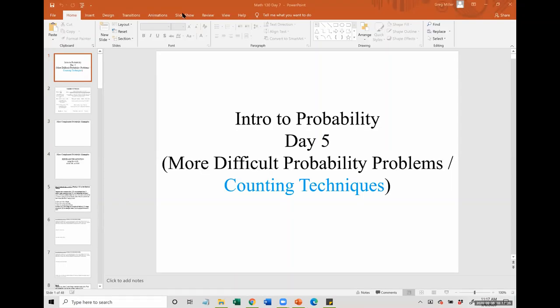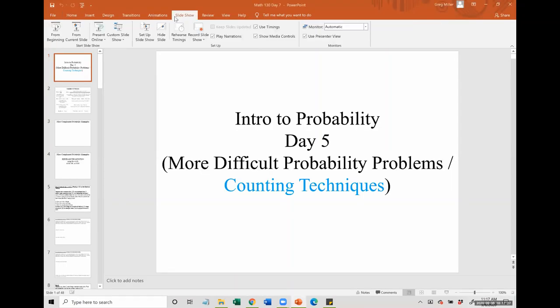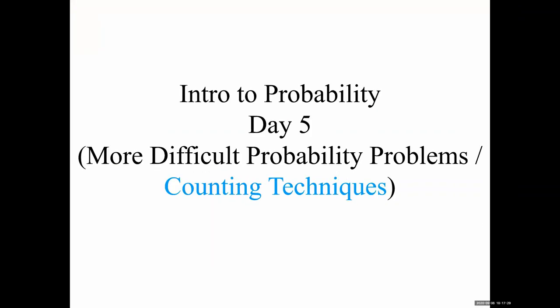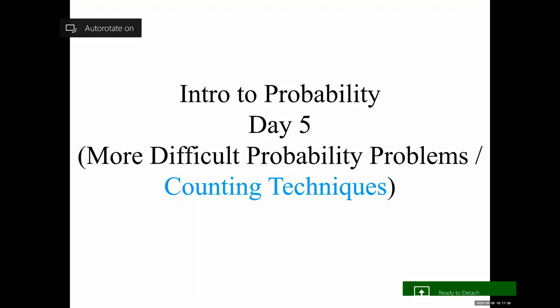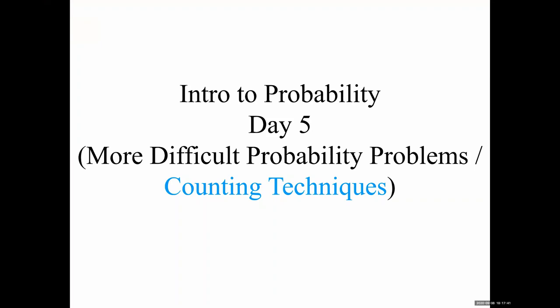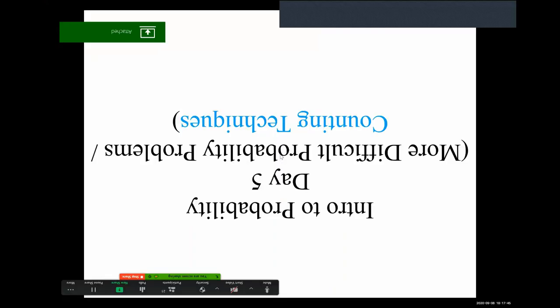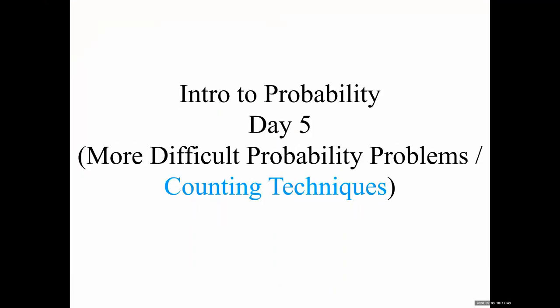Our lecture is going to be in two parts today. The first part covers more difficult probability problems, and the second part covers counting techniques — two different kinds of things for calculating probabilities. The first part is the most complicated probability problems you'll see in Chapter 5, but when we do them, it's going to be very similar to the stuff we've already done. We already have the tools to solve these problems.